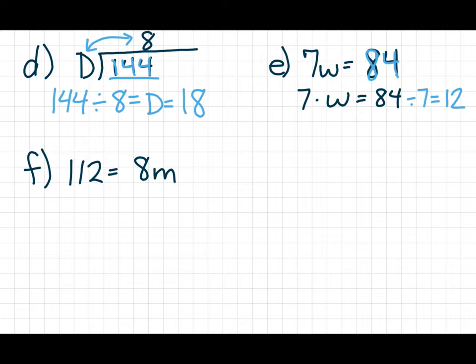Same thing here. All this means is 8 times M equals 112. 112 is our dividend. It's also our product. So all we have to do is divide 112 by 8, and we'll get M. That should equal 14.